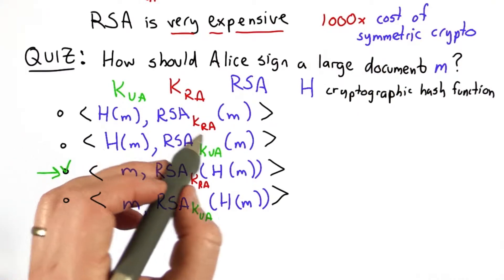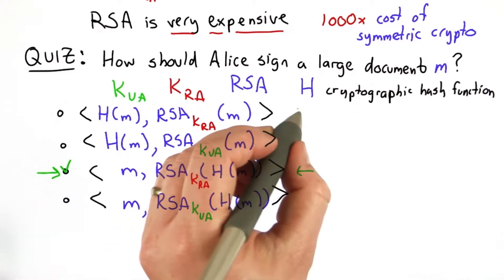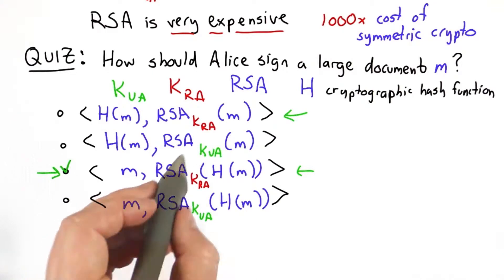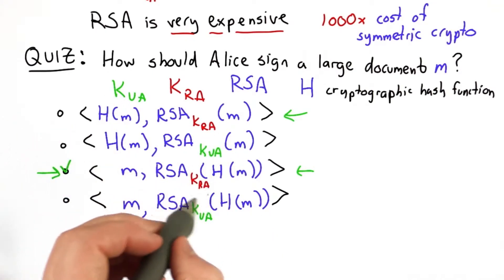To do that, we need to do something that uses Alice's private key. So that's these two options. If we use the public key, well, anyone can do that. The public key could be known to anyone else. We're assuming that the private key is only known to Alice, so the only one who could compute these two things would be Alice.